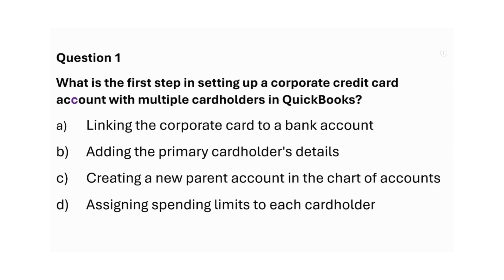What is the first step in setting up a corporate credit card account with multiple cardholders in QuickBooks? A. Linking the corporate card to a bank account. B. Adding the primary cardholder's details. C. Creating a new parent account in the chart of accounts. D. Assigning spending limits to each cardholder. Answer: Option C — Creating a new parent account in the chart of accounts.